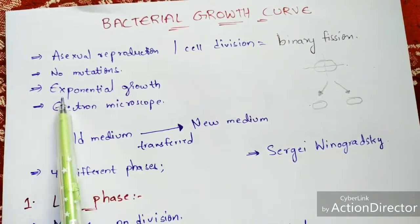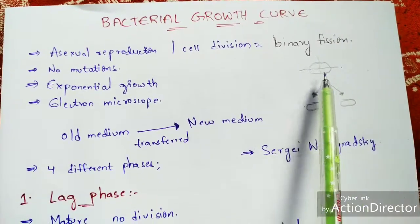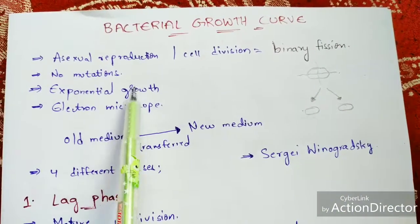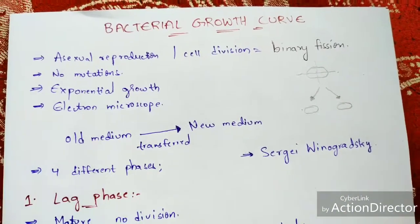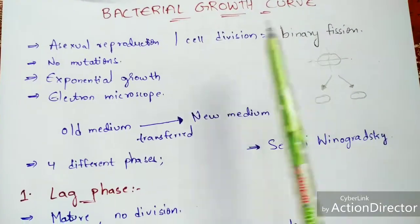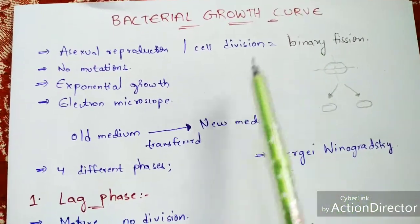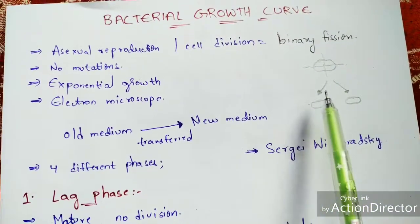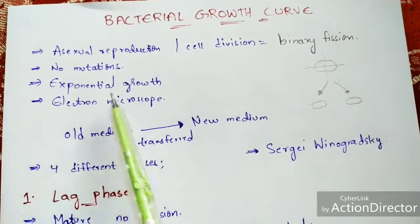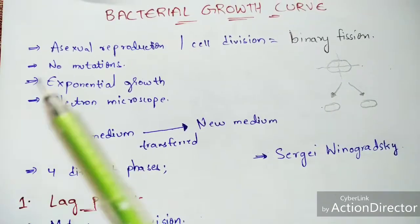Next is exponential growth. The bacterial cell will get divided rapidly, so exponential growth can be understood in the log phase — I will explain the four phases later. This exponential growth can be seen in the bacterial cell when it undergoes binary fission, and this phenomenon can be observed only with the help of an electron microscope.